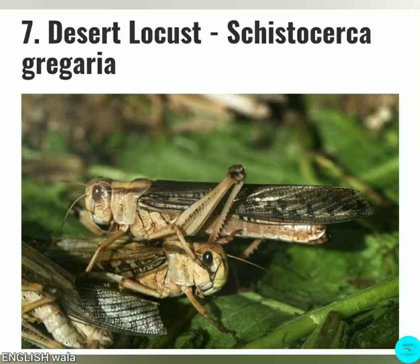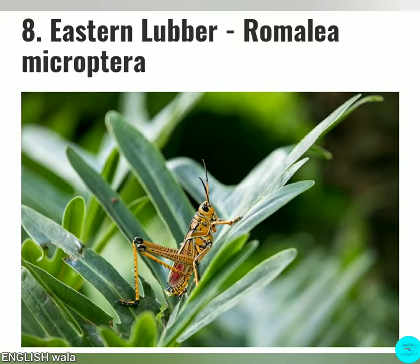The Desert Locust feeds on any vegetation it can find. They can eat leaves, flowers, seeds, fruits, stems, shoots, and they also eat tree bark.